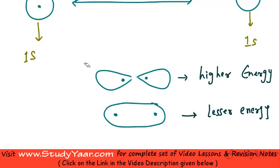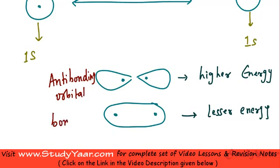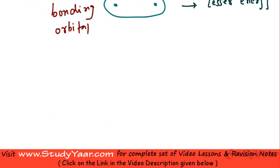So your higher energy level which you have seen over here, this corresponds to an anti-bonding orbital. Just see what is happening. You have your 1s energy level when your atoms are far apart.